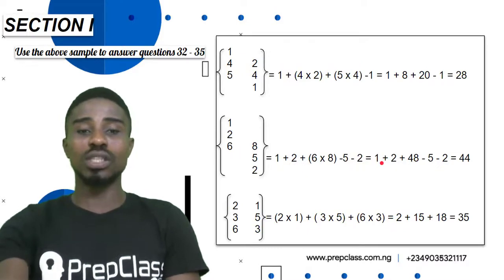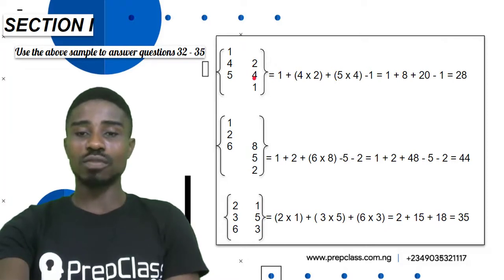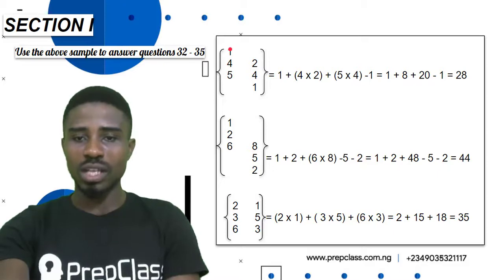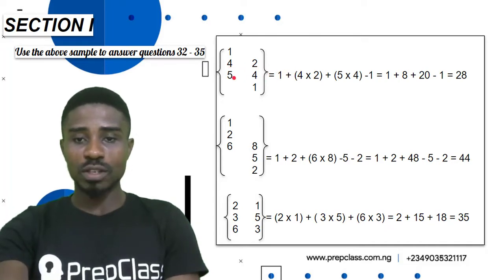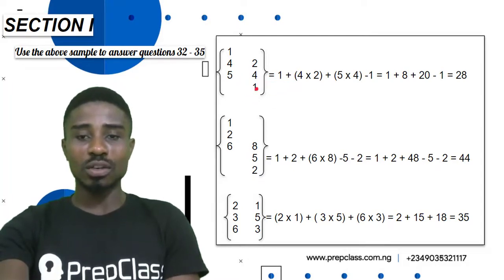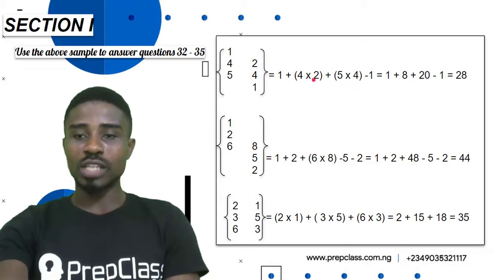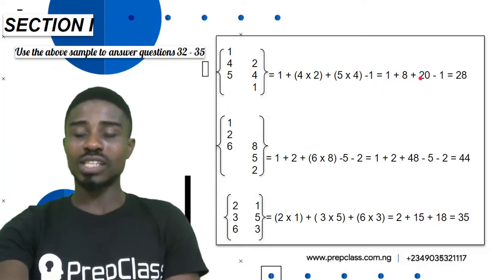This section has to do with questions 32 to 35. Looking at the first sample, we have numbers arranged on both sides. Since there is no number beside the first bracket it means it's one, so it becomes: one plus (four times two) in brackets, plus (five times four) in brackets, then minus one. Solving: one is 1, four times two is 8, five times four is 20, then minus one. So 1 plus 8 is 9, plus 20 is 29, minus 1 equals 28.